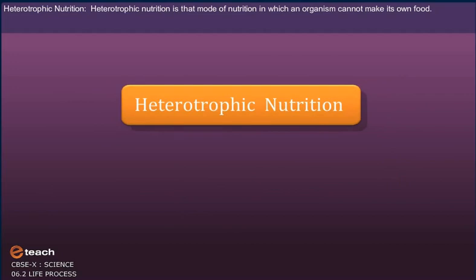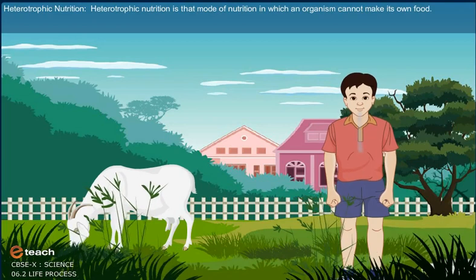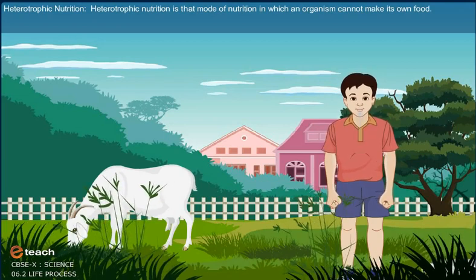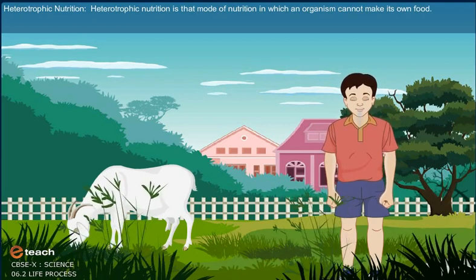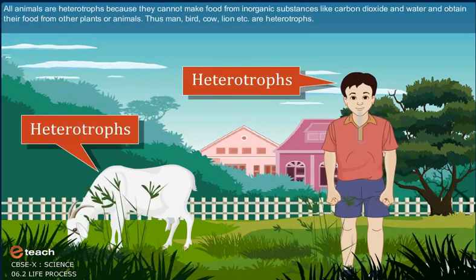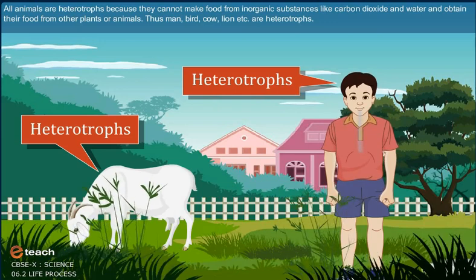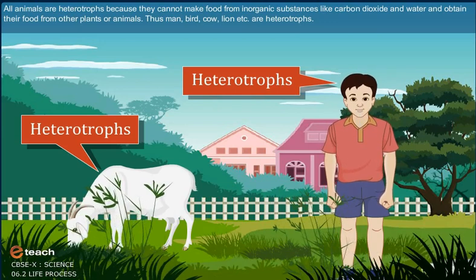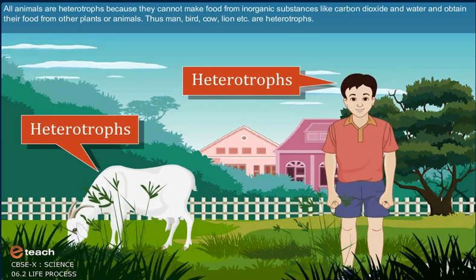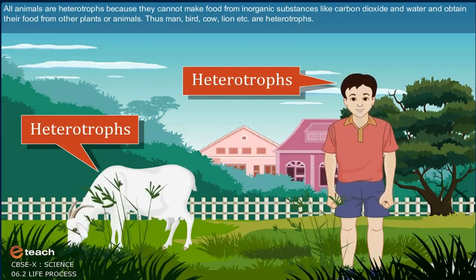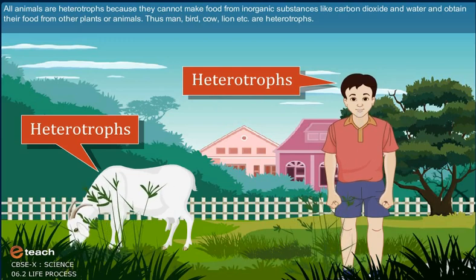Heterotrophic nutrition is that mode of nutrition in which an organism cannot make its own food. All animals are heterotrophs because they cannot make food from inorganic substances like carbon dioxide and water, and obtain their food from other plants or animals.